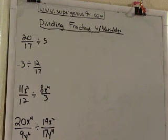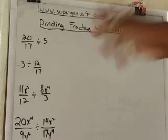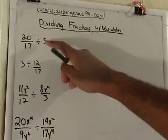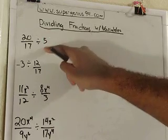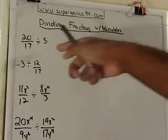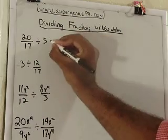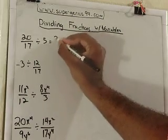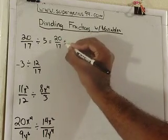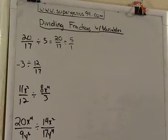We've got 20 over 17 divided by 5. First, let's think about how do we divide fractions. You take the fraction that is behind the division symbol, and you get the reciprocal, and you multiply. You might say, well, 5 isn't a fraction, it's a whole number. Yeah, you're right, 5 is a whole number, but how can you turn any whole number into a fraction?